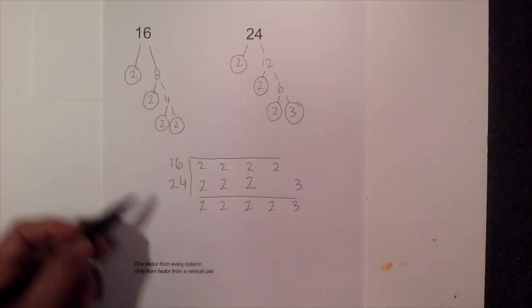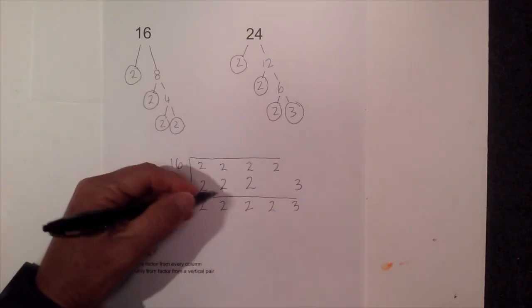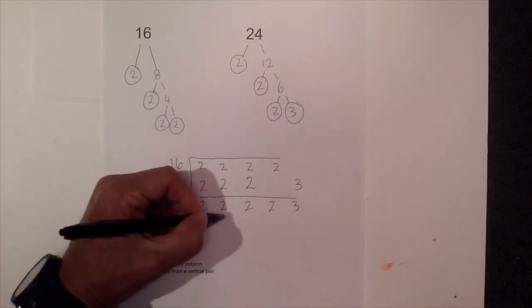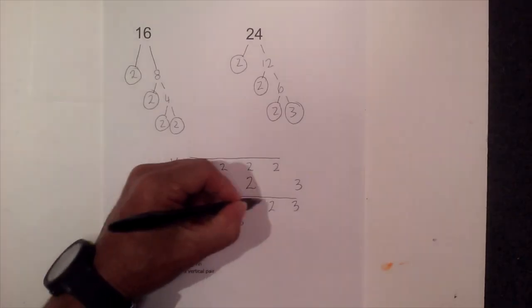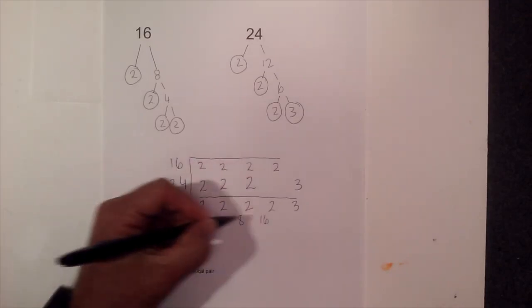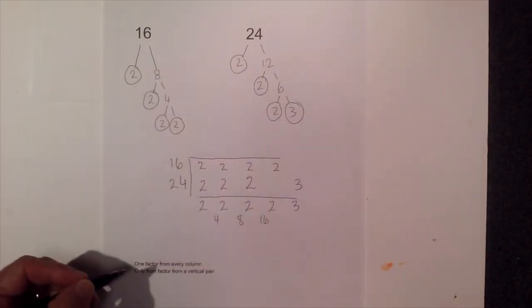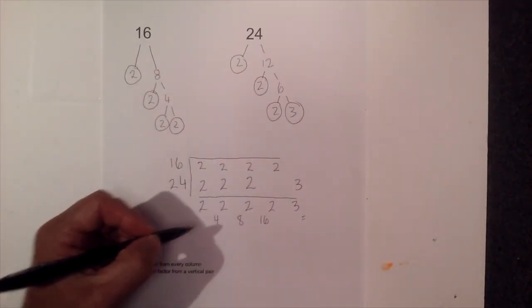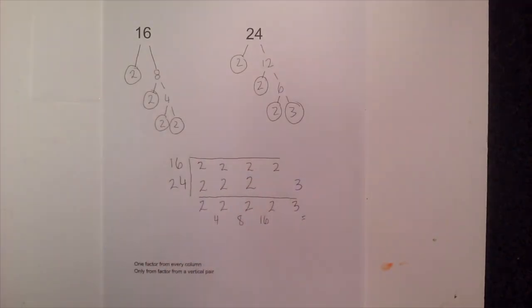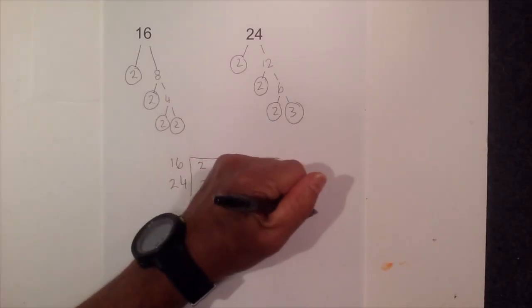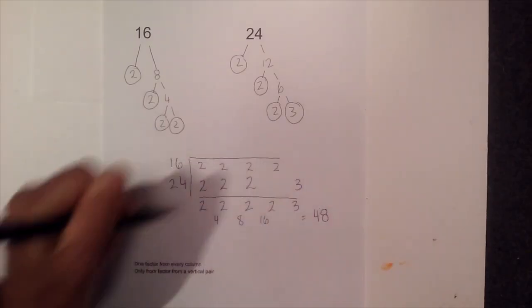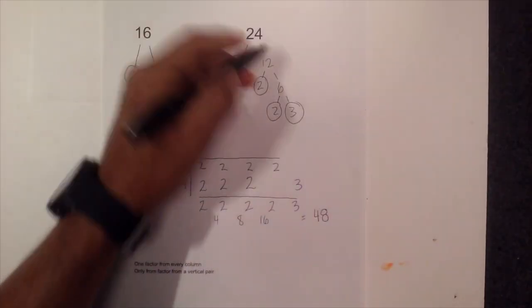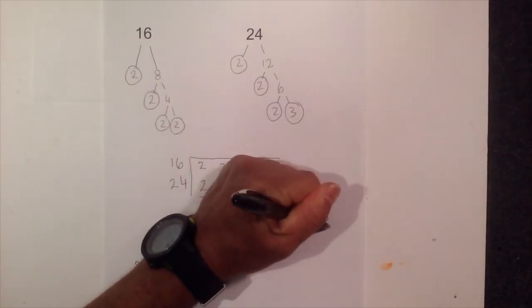Now all I do is multiply these together. 2 times 2 is 4. 4 times 2 is 8. 8 times 2 is 16. And 16 times 3 equals 48. So the LCM of 16 and 24 is 48.